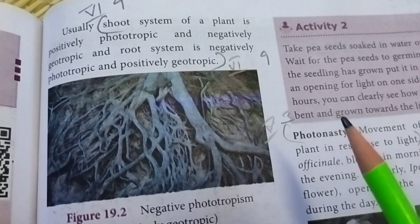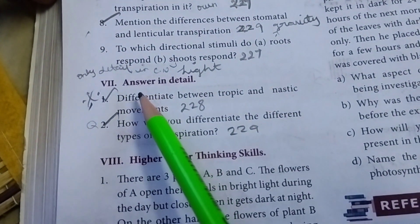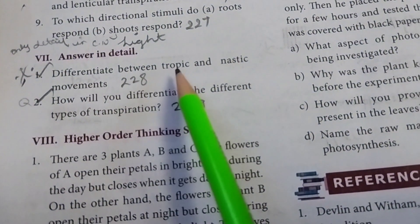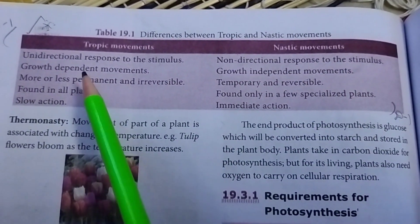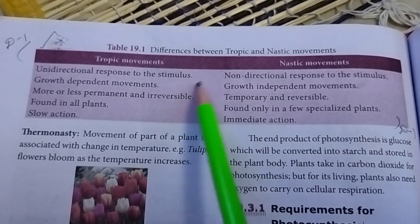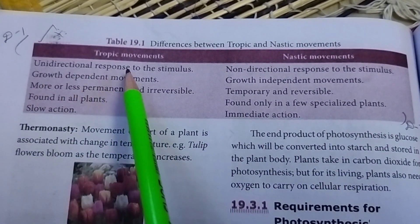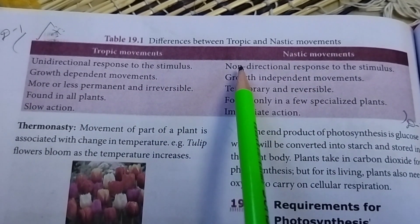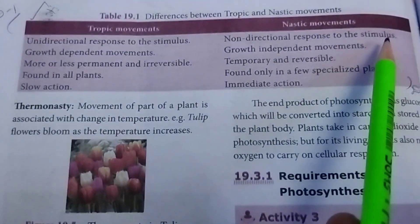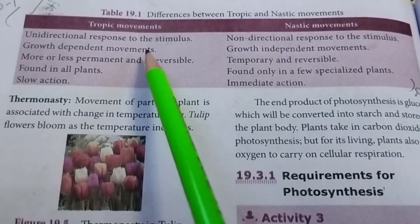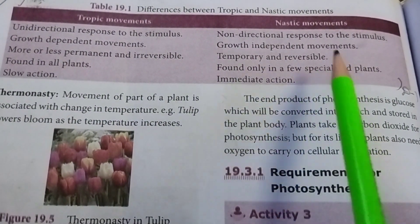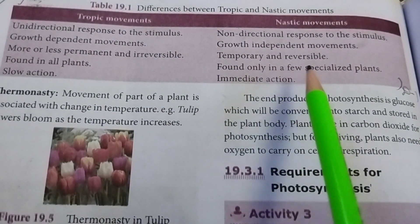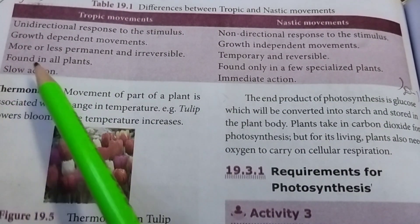Section VII: answer in detail. First question: differentiate between tropic and nastic movements. Take page 228. Tropic movement is a unidirectional response to the stimulus; nastic movement is a non-directional response. Tropic movement is growth-dependent, more or less permanent and irreversible, found in all plants, and slow. Nastic movement is temporary and reversible, found only in a few specialized plants, and has immediate action.